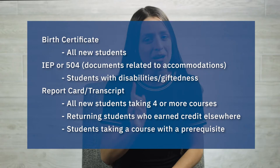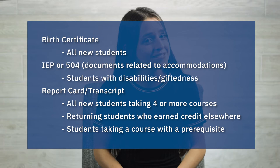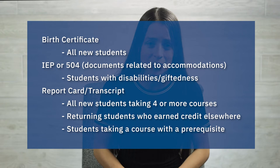Number four: forgetting to include the supporting documents in that original email with your enrollment packet. The supporting documents you'll need to enroll include a birth certificate for all new students, an IEP or 504 for any student that may apply, and a report card and transcript for new students taking four or more courses, students who have completed a year away from Griggs, or students taking a course with a prerequisite they completed at another school.